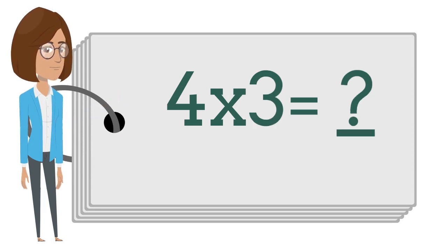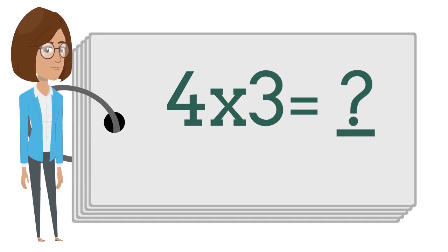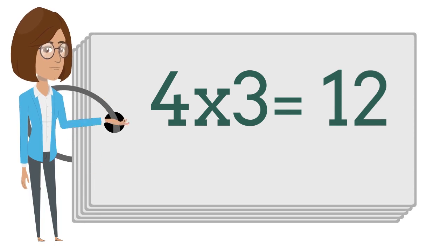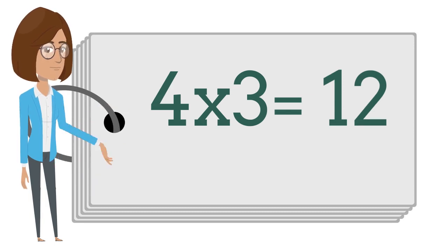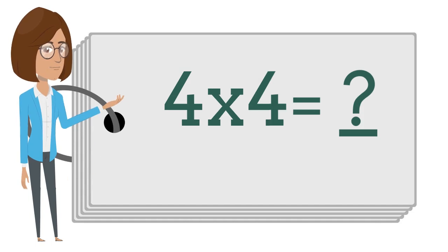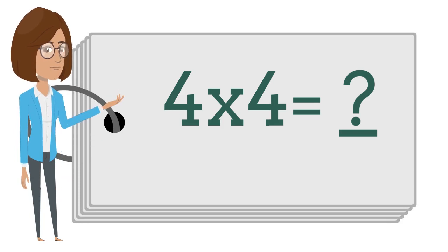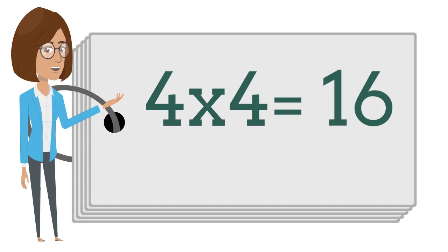4 times 3 is? Can you tell me? Say your answer out loud. 4 times 4 is? Can you tell me? Say your answer out loud. 4 times 4 is 16. 4 times 4 is 16.